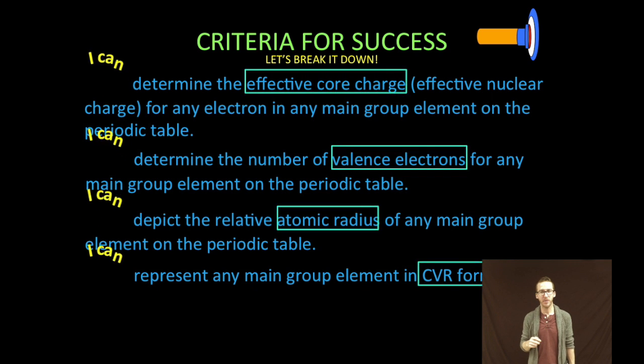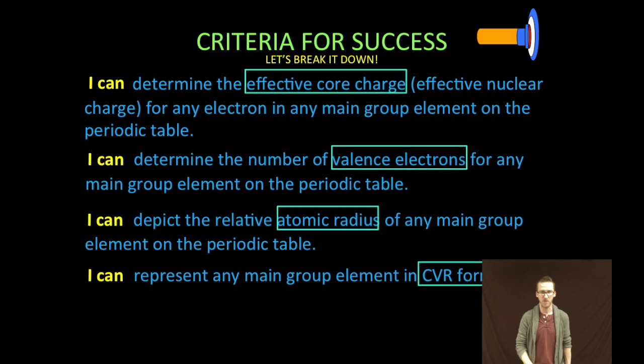Two, we're going to determine the number of valence electrons for any main group element on the periodic table. Three, we're going to determine the relative atomic radius of any main group element on the periodic table, and using those core valence radius ideas we're going to represent any main group element in CVR format.